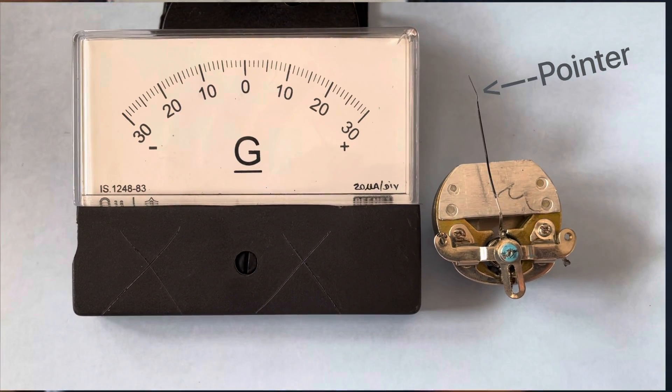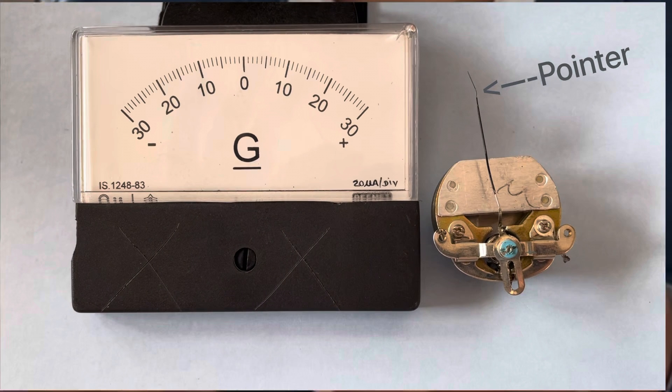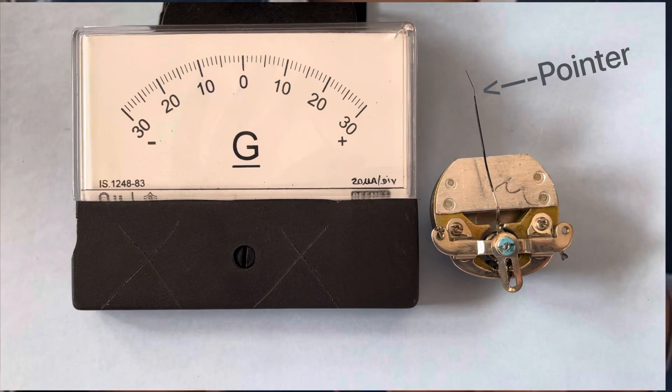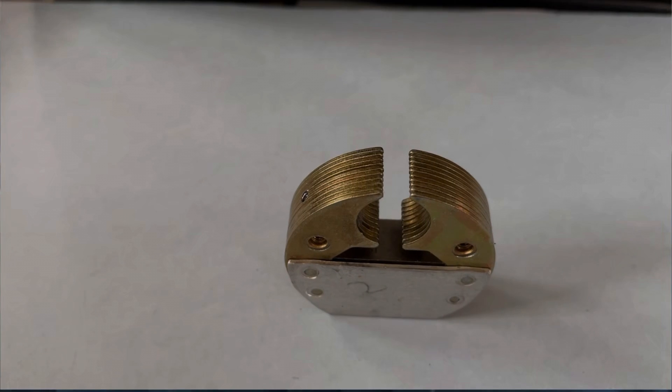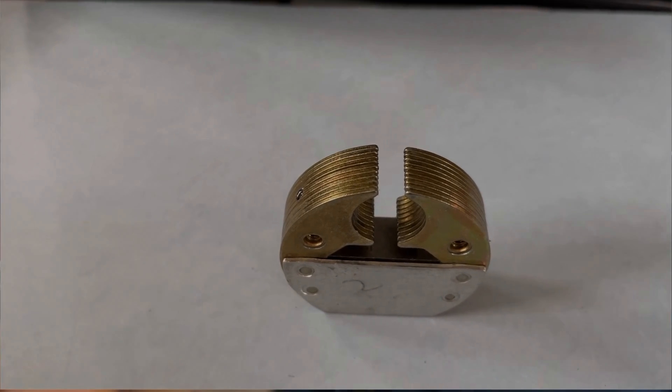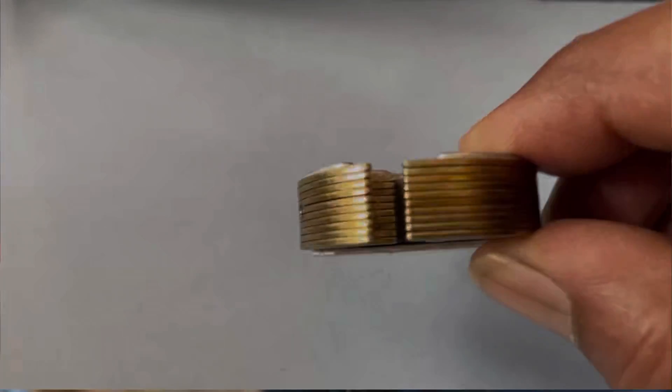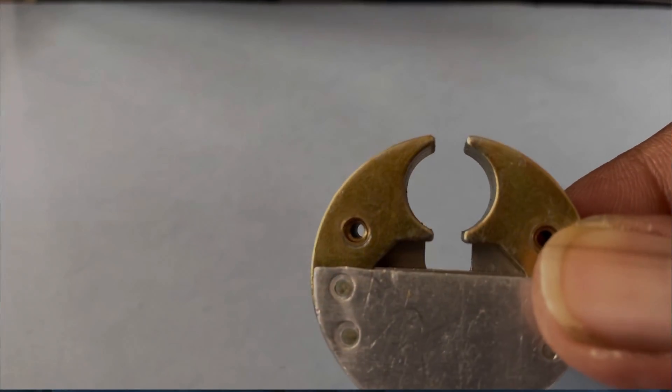You can see here the scale and you can see here the pointer and the other parts I will be showing you from a closer look. This is our powerful concave pole pieces. How do you say it is a powerful concave pole pieces? See here.